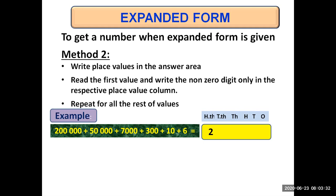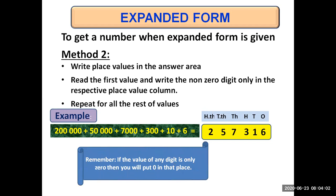Repeat for all the rest of the values. Next value is fifty thousand — the non-zero digit is five. Fifty thousand means five ten thousands, so in ten thousands write five. Seven thousands means in thousands column write seven. Three hundreds means in hundreds column write three. Ten means in tens column write one — because ten is one times ten. And in ones column write six. So we have just written the number directly: write the place values at the top, read the first value and write the non-zero digit in the respective place value column, then second, third, fourth digit and so on, starting from the leftmost.